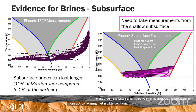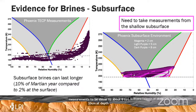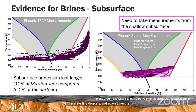We would want the measurements to be closer to about eight to ten centimeters depth if we are trying to identify liquid formation. The type of liquids that we're forming are very small — these are tiny droplets — so we'll need sensitive equipment to make those measurements to identify when we're forming these brines.